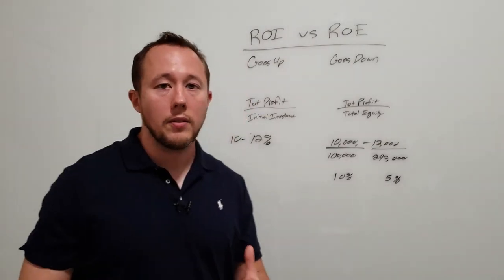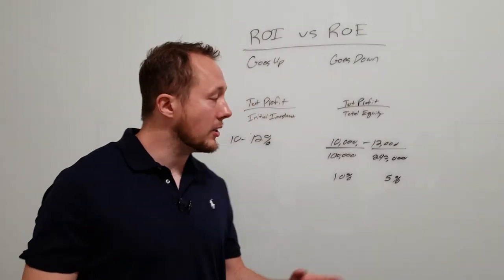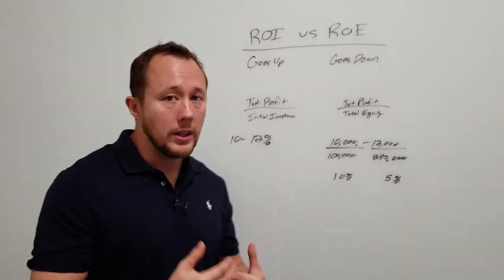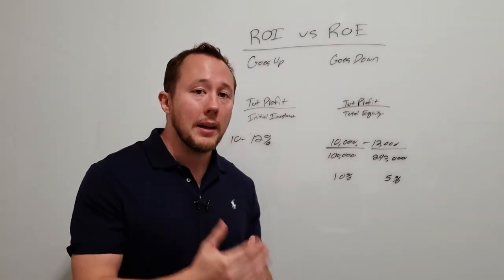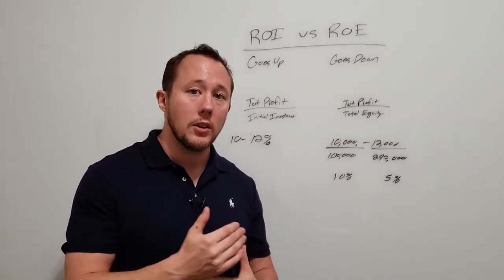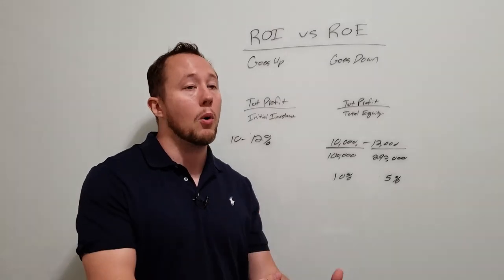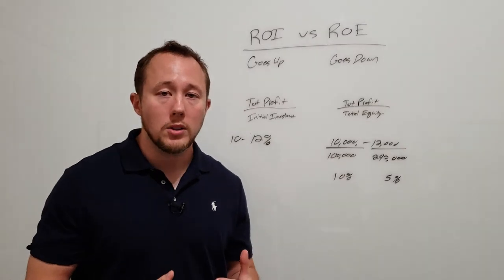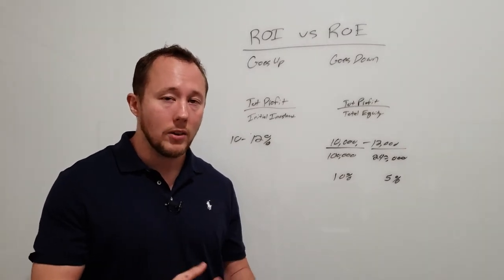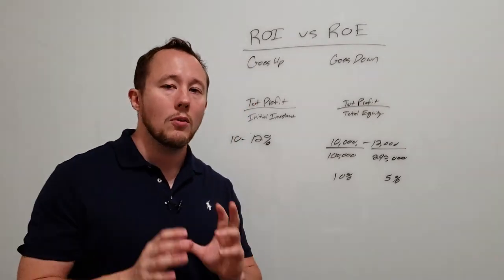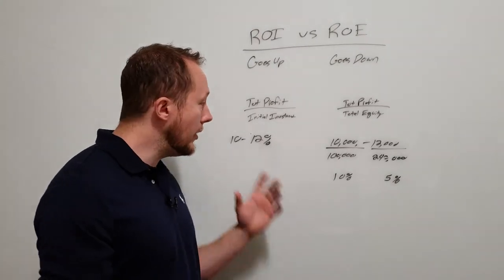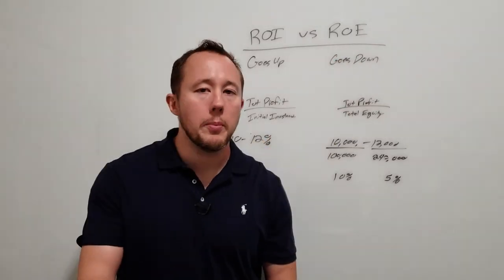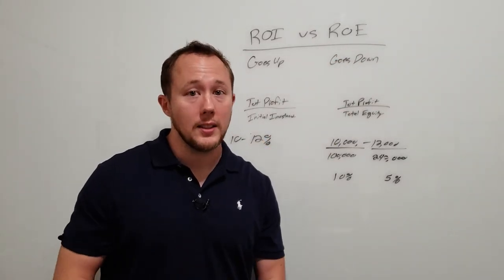That's really important and that's why a lot of investors say you should never pay off your property — because the more equity you have, the lower your returns get. You want to balance, and your return on equity may depend on where you are in your retirement cycle. If you want to retire soon, you might want more equity and lower returns because of lower risk. If you're a newer investor, you might want higher returns and higher risk. You've got to determine what your return goals are, but you need to understand the difference between ROI and ROE to make your best investing decisions.